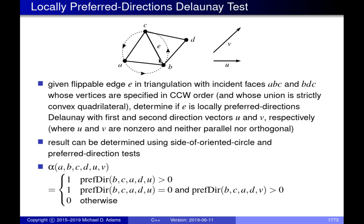We take the edge we want to test for the locally preferred directions Delaunay condition. This edge has two incident faces because it is flippable. We arbitrarily pick one face and label its vertices ABC, then label the remaining point as D. We form the circumcircle through ABC and check whether D lies outside, inside, or on the circle.